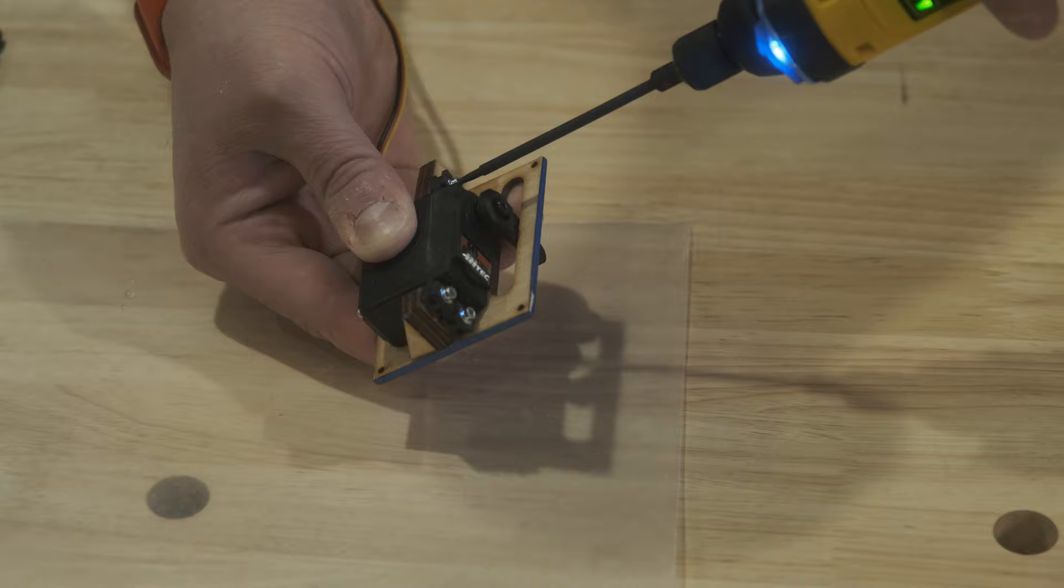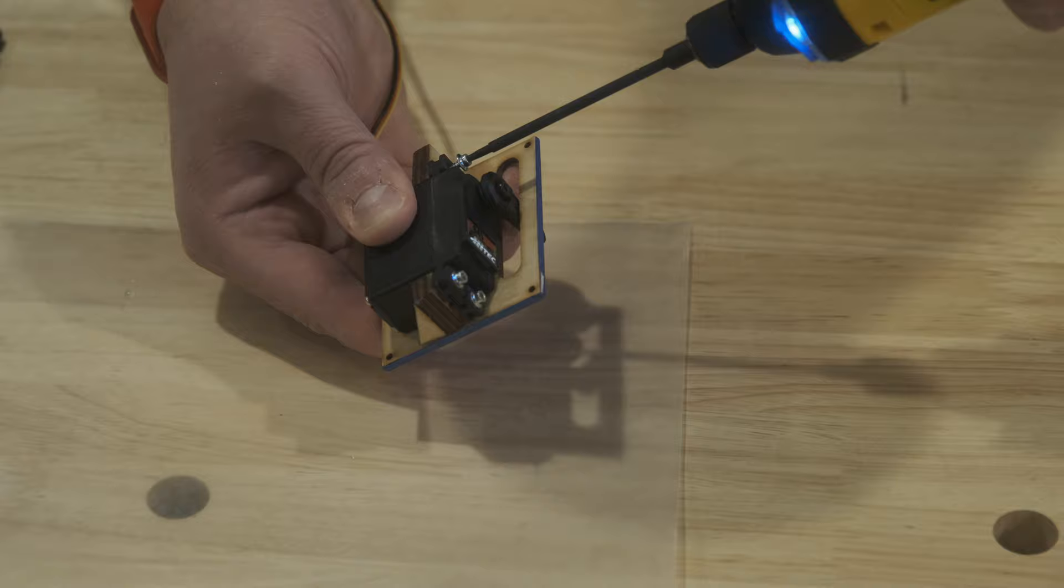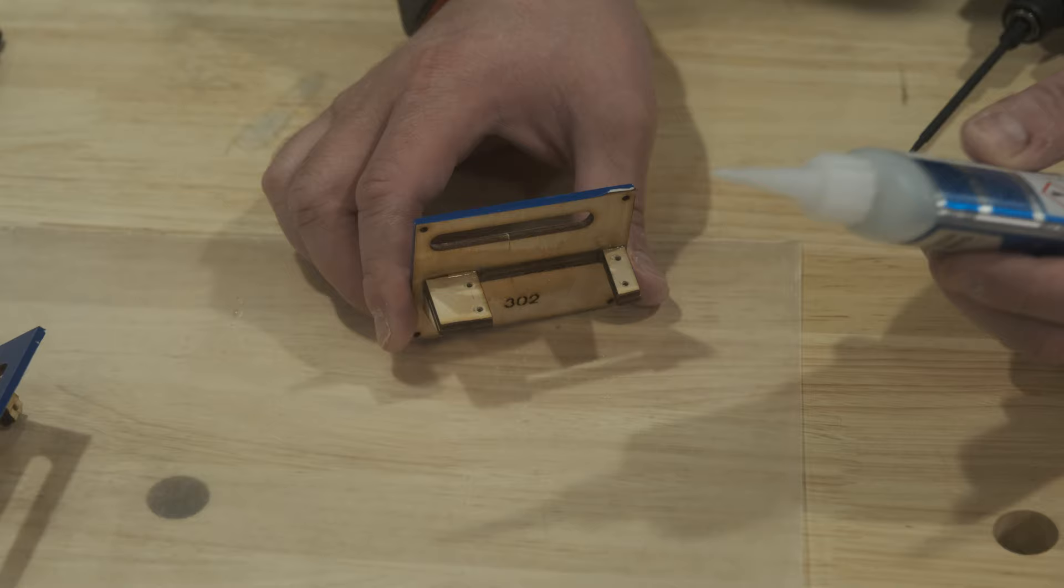When we're done, we're going to take them all out again. We'll take all those out, get some super thin CA glue, and just really harden those surfaces and mount points.